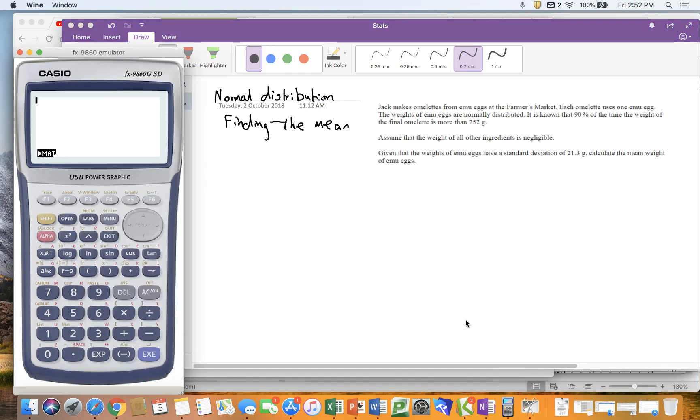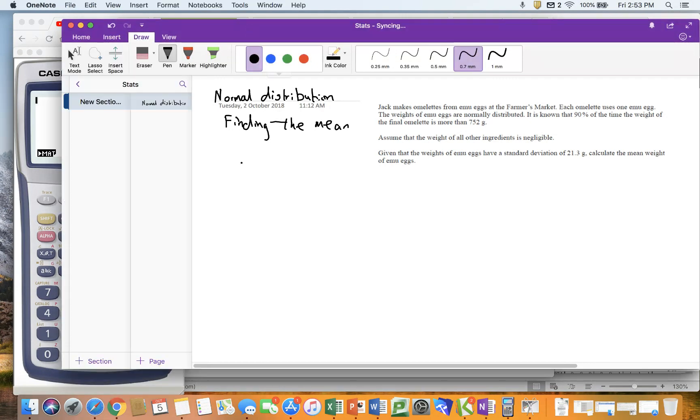Okay, so in this video we're going to try and find the mean by using a normal distribution. So I've gone back to 2009 and I found a question about omelettes, which kind of works. So we're going to use that as our main thing to be able to work this out.